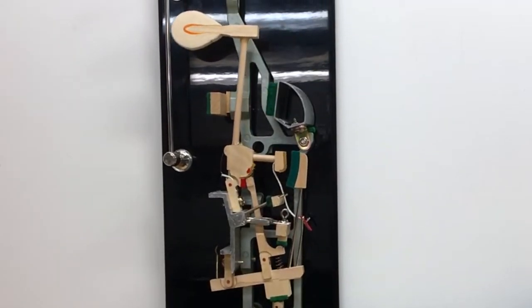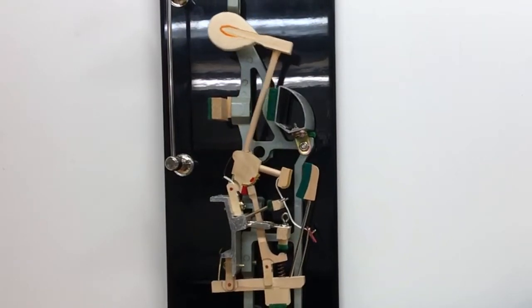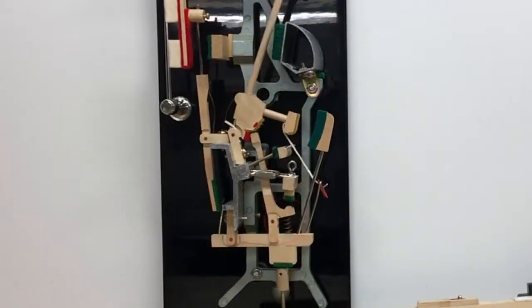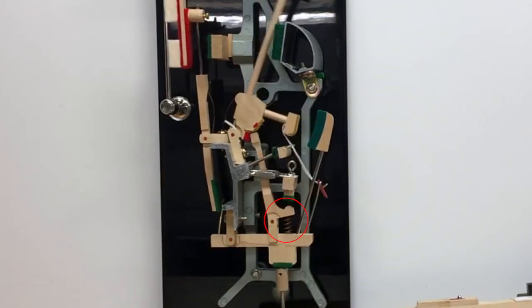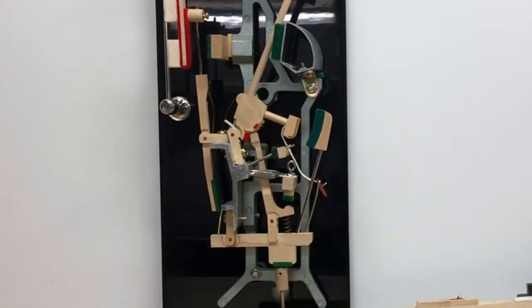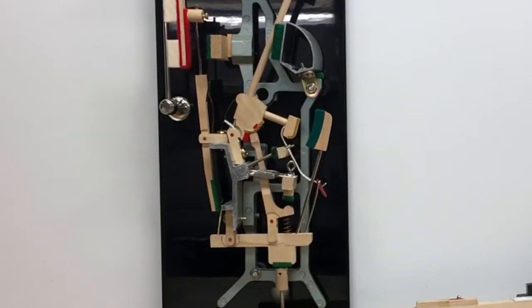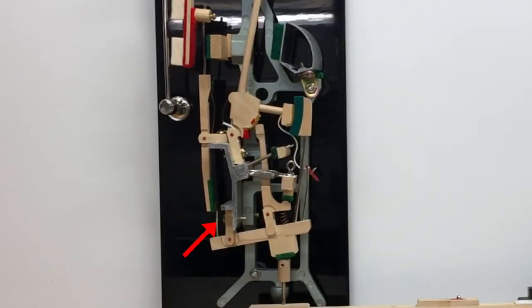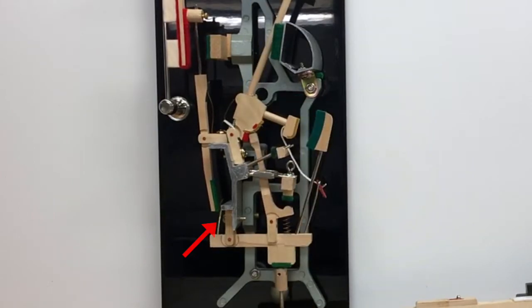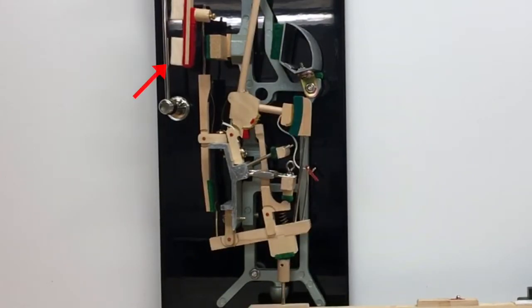The whippen contains additional parts that are crucial to piano function. The jack spring compresses when the jack toe moves down, and it pushes the jack back under the hammer butt when the key is released and the parts reset. The spoon presses against the lower part of the damper lever as the whippen rises, lifting the damper head from the string.